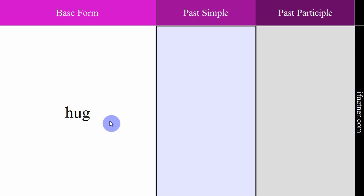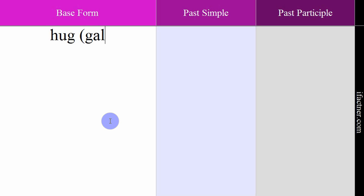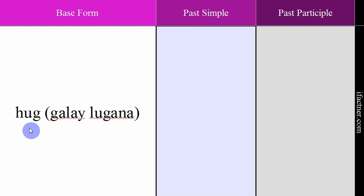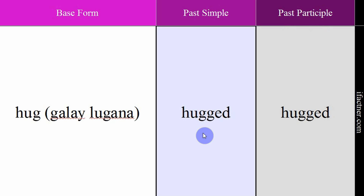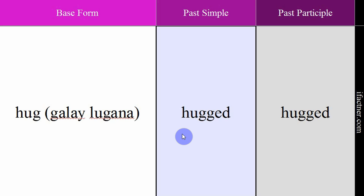The next verb is 'hug', meaning gale lagana, japphi daalna — to hug someone. Example: 'She hugs everyone.' — Woh har kisi ko gale lagati hai. Past simple and past participle: hugged. Past simple: 'He hugged his mom.' — Usne apni ammi ko gale lagaya. Past participle: 'I have hugged her.' — Mein usay gale laga chuka hoon. Verb: hug. Meaning: japphi daalna, gale lagana. Past simple: hugged. Past participle: hugged.